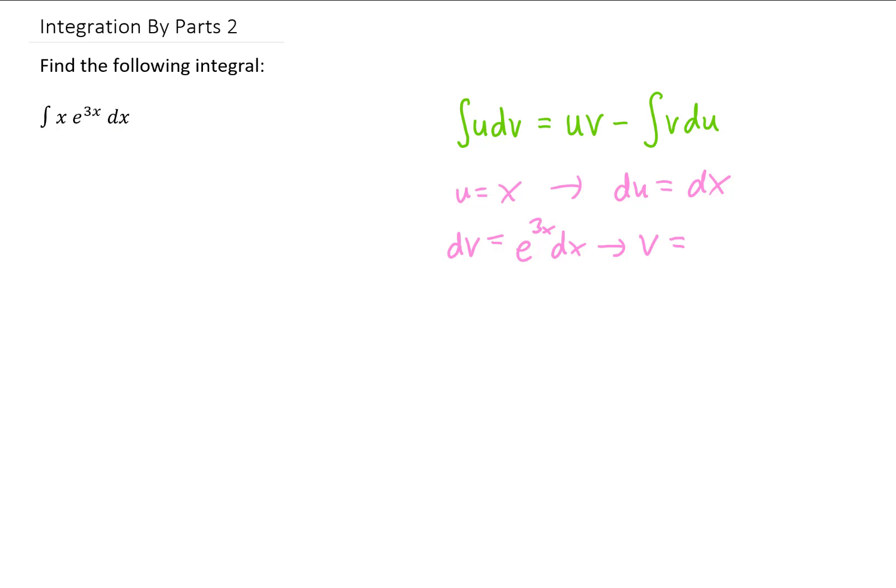Note that to get v, we need to integrate e to the 3x, and that leaves us with 1 third e to the 3x. If you're wondering where this 1 third comes from, it comes from a u substitution. You can look back at some of my previous u substitution videos if you want to take a deeper look at that.